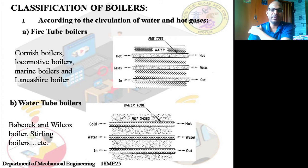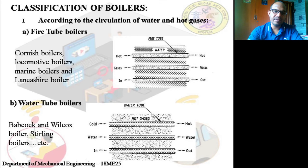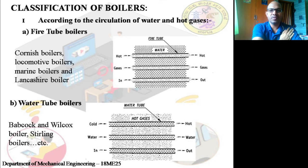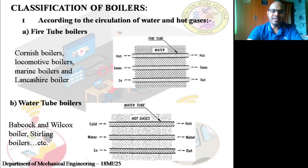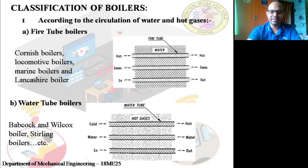For water tube boilers, examples include the Babcock and Wilcox boiler — named after the two scientists Babcock and Wilcox who invented it — and the Stirling boiler.